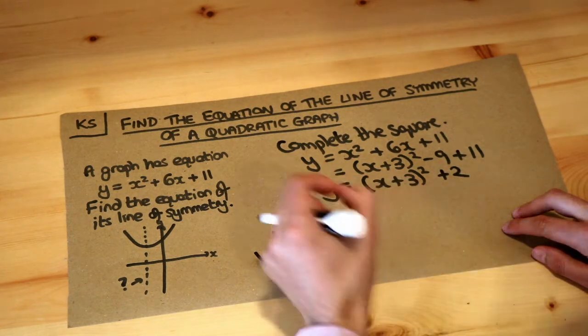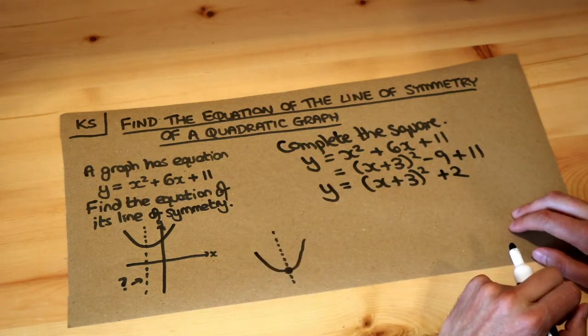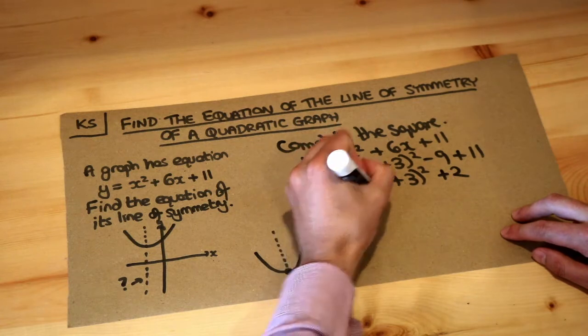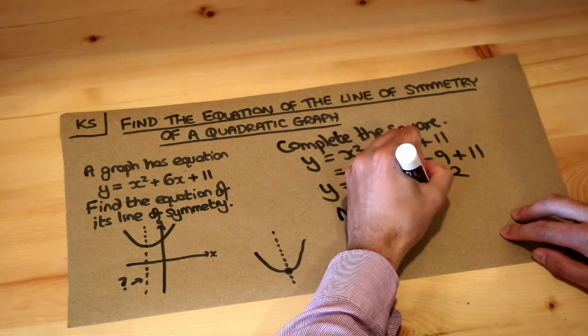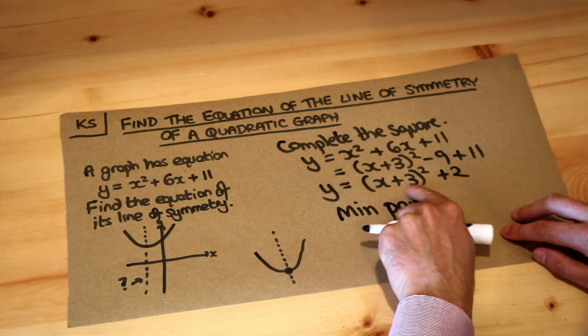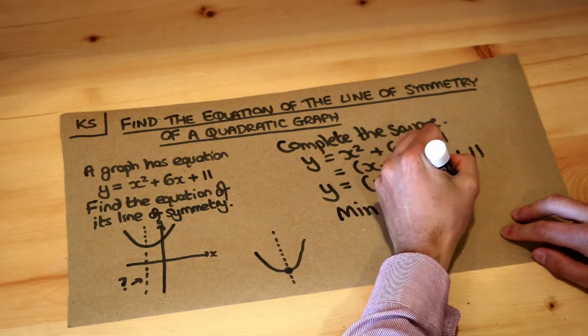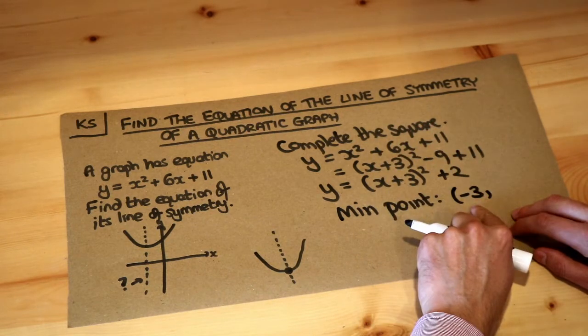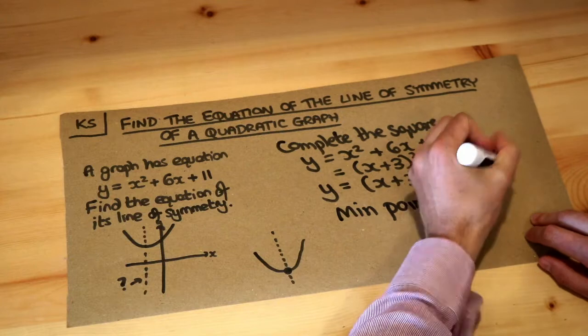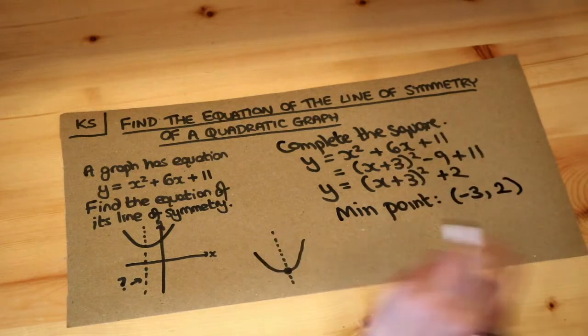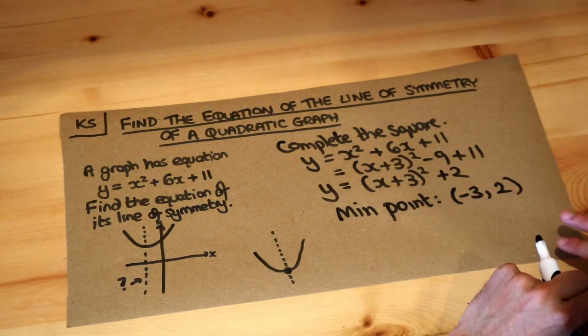You should already know how to do that prior to this video. So, and remember the minimum point, to find it, we just negate whatever that value is. Now because it's positive it becomes negative, so it becomes minus 3 as the x value, and then the y value is that number at the end. So that's the y value. So that's your minimum point, and we've already seen how to do that previously.